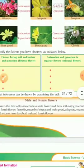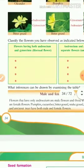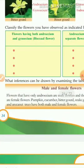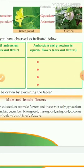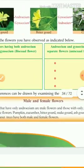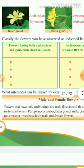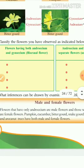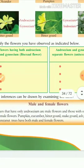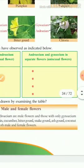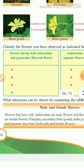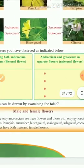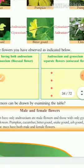Now another concept — male and female flowers. Flowers that have only androecium are male flowers, and flowers with only gynoecium are known as female flowers. Pumpkin, cucumber, bitter gourd, snake gourd, ash gourd, coconut, and areca nut trees all have both male and female flowers.